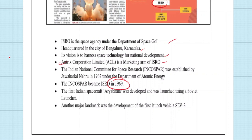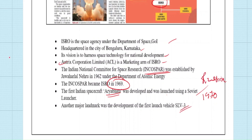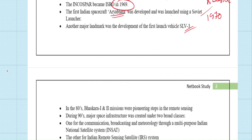ISRO was officially established in 1969, but before that it existed as INCOSPAR under the Department of Atomic Energy. In 1969, when Indira Gandhi was Prime Minister, a new department was established for space missions and named ISRO. The first Indian spacecraft was Aryabhata, launched in 1975 — a great achievement. This satellite was launched with Russia's launch vehicle. Later, India developed its own — the Satellite Launch Vehicle (SLV-3) was the first successful launch vehicle developed by India.